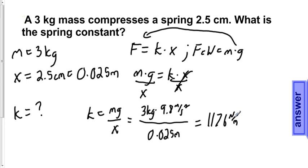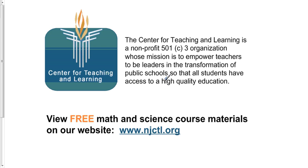which is the standard measurement of k. This is our answer. 1,176 newtons per meter equals k. Thank you.